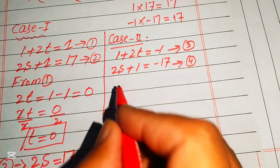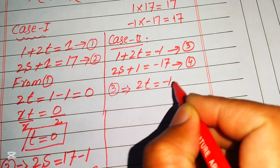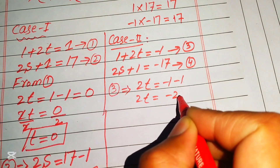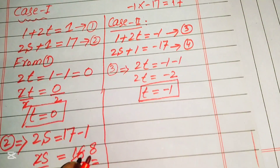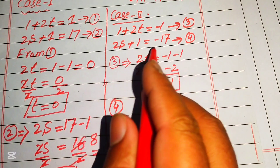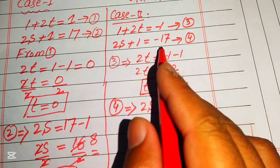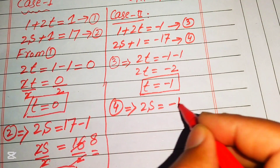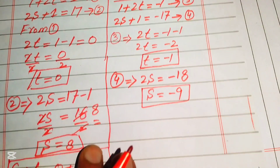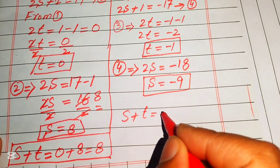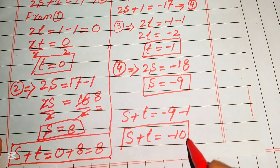In Case 2, from Equation 3: 1 plus 2t equals minus 1, so 2t equals minus 2, giving t equals minus 1. From Equation 4: 2s plus 1 equals minus 17, so 2s equals minus 17 minus 1 equals minus 18, giving s equals minus 9. Therefore s plus t equals minus 9 plus (minus 1) equals minus 10.